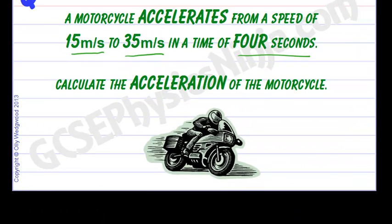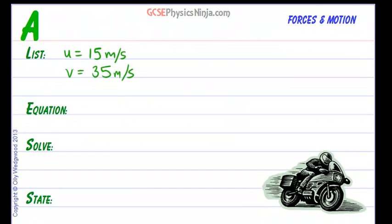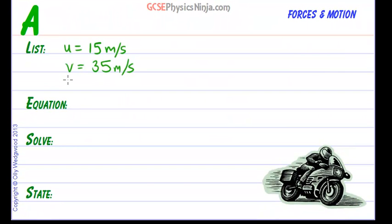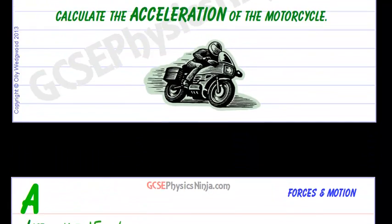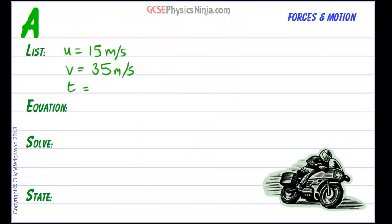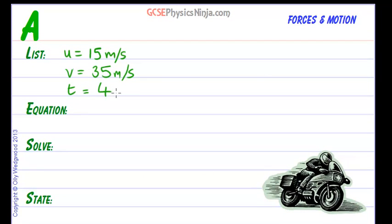Check that, yep 35, and we know that it took a time of t equals 4 seconds. There we are, 4 seconds, and there's our list all done. And what are we trying to find? We're trying to find acceleration in meters per second squared. Watch out for the units for acceleration, that's squared.